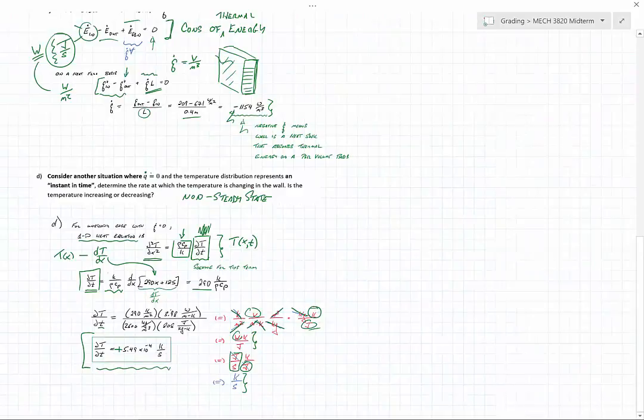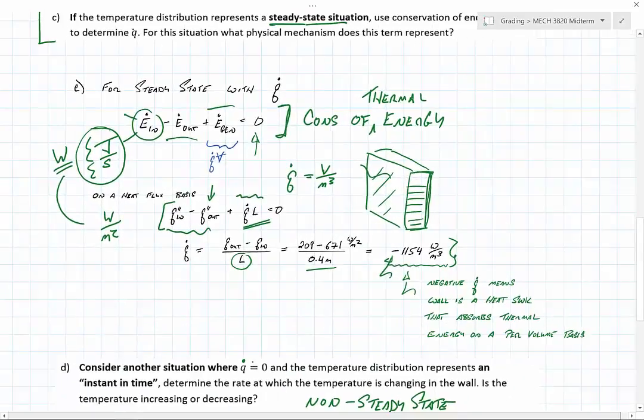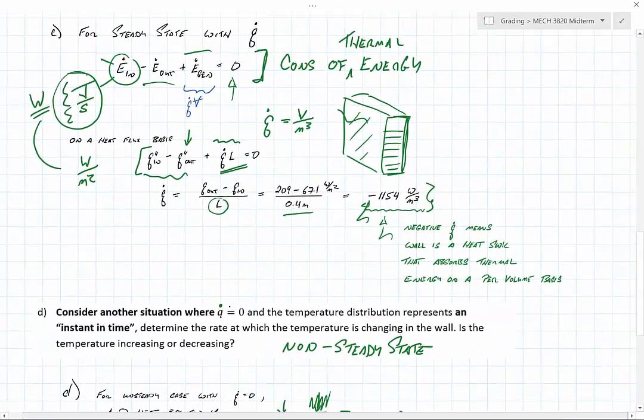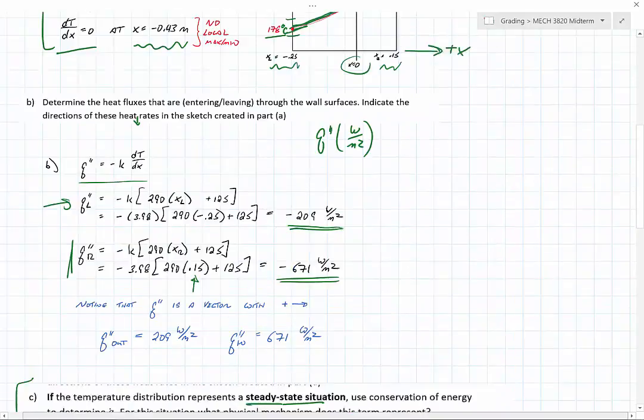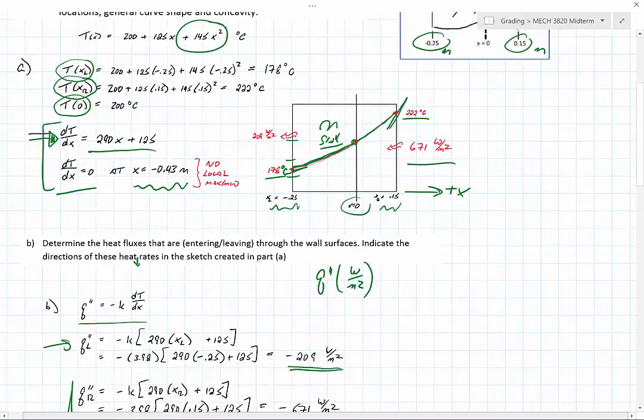Which makes sense—if I would turn off this negative energy sink, we would have more energy coming into the wall, 671 watts per square meter, than we would have leaving, and the temperature in the wall would have to increase.